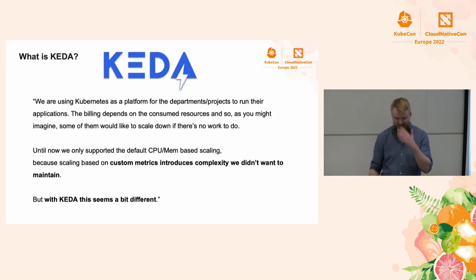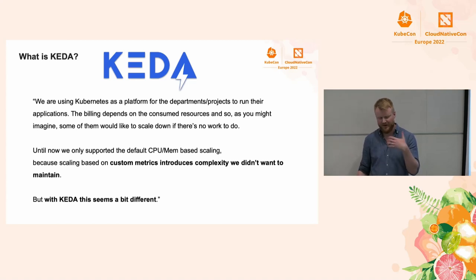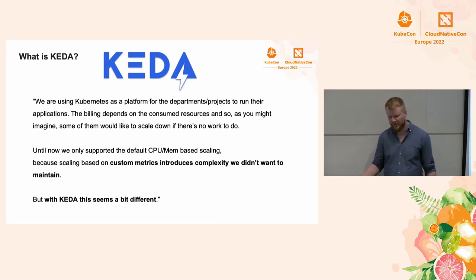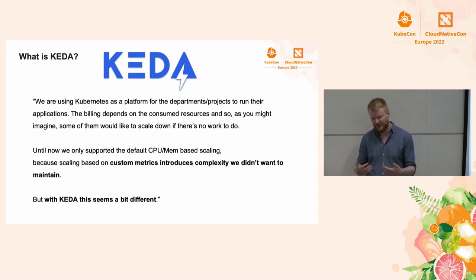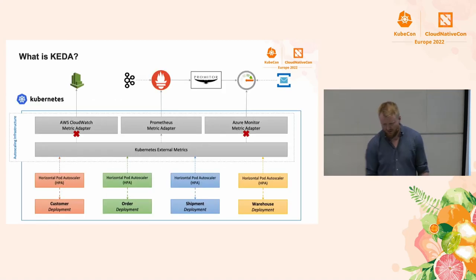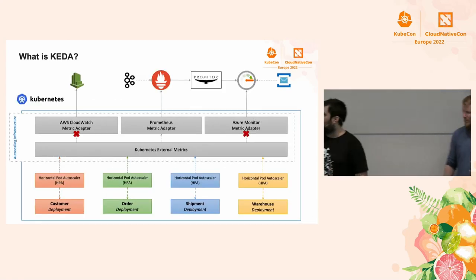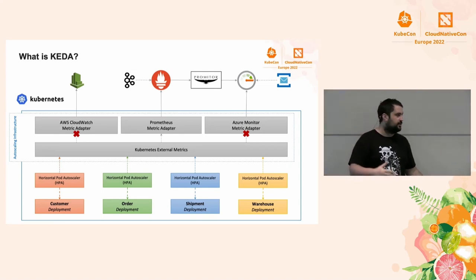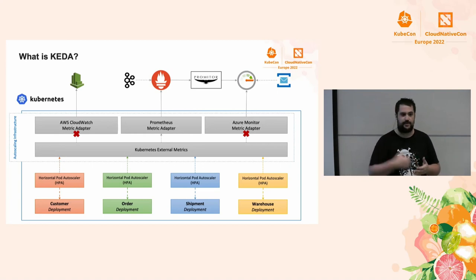There is a quote from one of our users: there were ways to do autoscaling based on custom metrics, but the configuration to actually do that was very, very complex. We just try to do the same thing, but very easily. We can imagine the common scenario before KEDA — for those who have been working with Kubernetes and needed to scale based on Azure metrics, AWS metrics, or others.